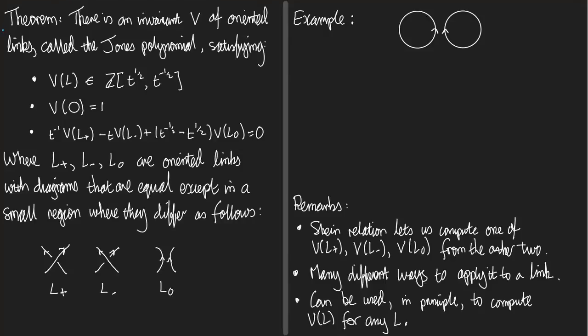We begin not with the definition, but with a theorem, which tells us everything we need to know about the Jones polynomial in order to work it out for a specific link. So, there is an invariant, written V, of oriented links. It's called the Jones polynomial, and it satisfies the following properties.